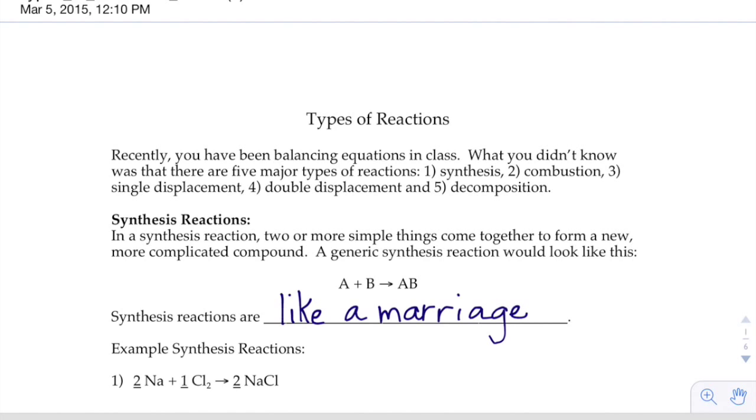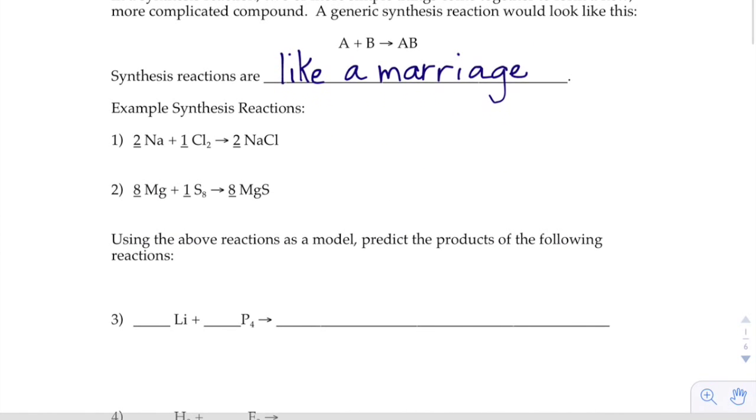So there's a couple examples of synthesis that they give there for you that are already done. You can see on the left hand side, you take the element sodium and the element chlorine, you put them together and you make the compound sodium chloride. Now what a lot of people will ask is, what happened to that two? Because on the left hand side here, we have that little two on our chlorine and on the right hand side, it disappeared.